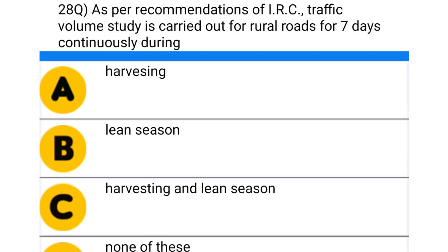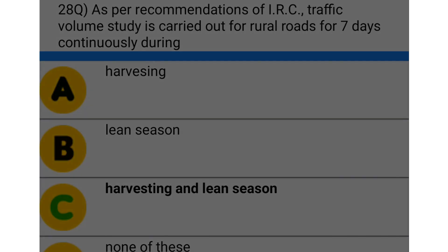Next question: as per the recommendation of IRC, traffic volume study is carried out for rural roads for 7 days continuously during — option A: harvesting season, option B: lean season, option C: harvesting until lean season, option D: none of the above. The correct answer is option C: harvesting until lean season.